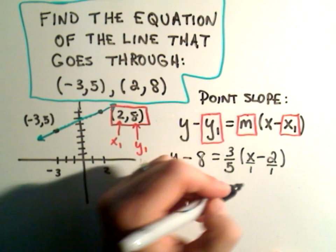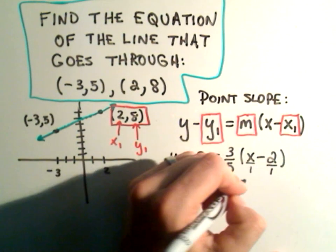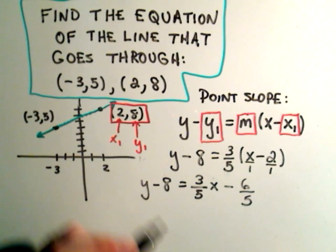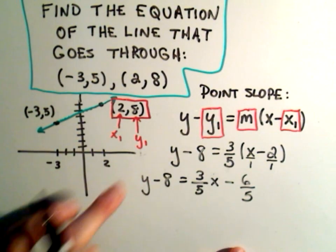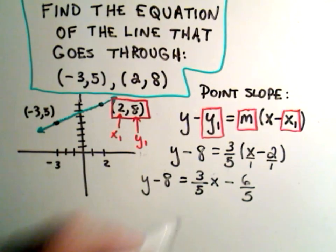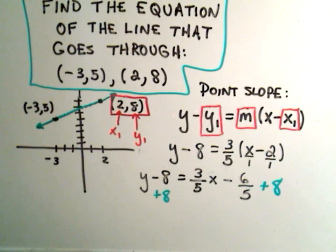And I will make my second one a fraction. So 3 times negative 2 is negative 6. On the bottom, I'll get 5. This minus 8, well, I would like to move it to the right side. So to move it to the right side, I'll simply add 8 to both sides. So I'll have to add 8 to the right side.